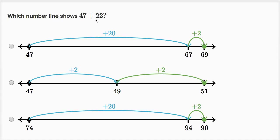Which number line shows 47 plus 22? Let's see, this first number line, we're starting at 47, then we add 20 to get to 67, and then we add two to get to 69. So if you add 20 and then you're adding two, you're adding 22. So this one seems right.